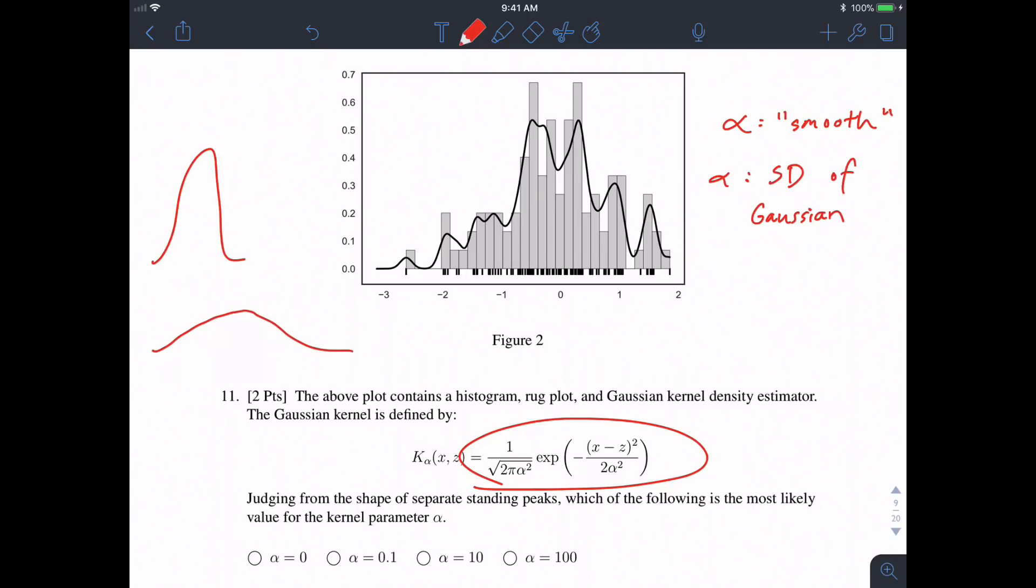Small alpha, large alpha. Let's look at the options we have. We have alpha equals 0, which doesn't really make sense because if you plugged in alpha equals 0 here, you'd be dividing by 0, which doesn't make sense. So let's ignore alpha equals 0, and then we have three choices: 0.1, 10, and 100.